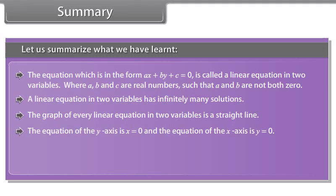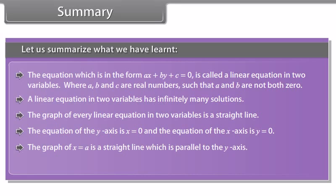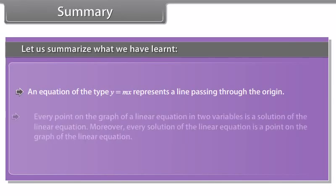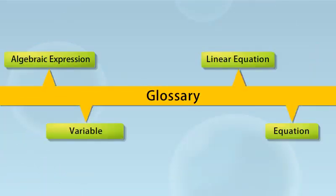Let us summarize what we have learned. The equation in the form AX plus BY plus C equals 0 is called a linear equation in two variables, where A, B, and C are real numbers such that A and B are not both zero. A linear equation in two variables has infinitely many solutions. The graph of every linear equation in two variables is a straight line. The equation of the Y axis is X equals 0, and the equation of the X axis is Y equals 0. The graph of X equals A is a line parallel to the Y axis; the graph of Y equals A is a line parallel to the X axis. An equation of the type Y equals MX represents a line passing through the origin. Every point on the graph is a solution of the equation, and every solution is a point on the graph.